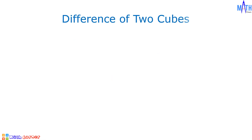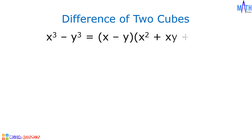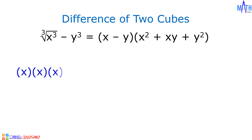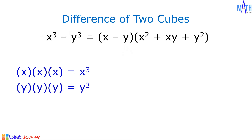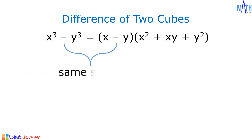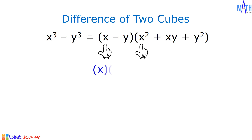For the difference of two cubes, let us consider x cubed minus y cubed. It is equal to quantity x minus y times quantity x squared plus xy plus y squared. In the binomial factor, x comes from the cube root of x cubed and y comes from the cube root of y cubed. And we have same signs here. For the trinomial factor, x squared comes from x times x.